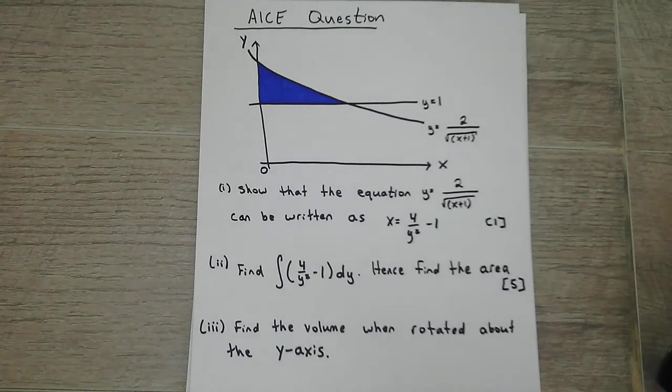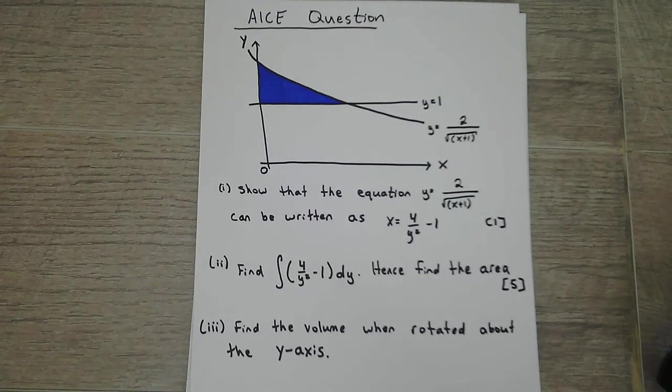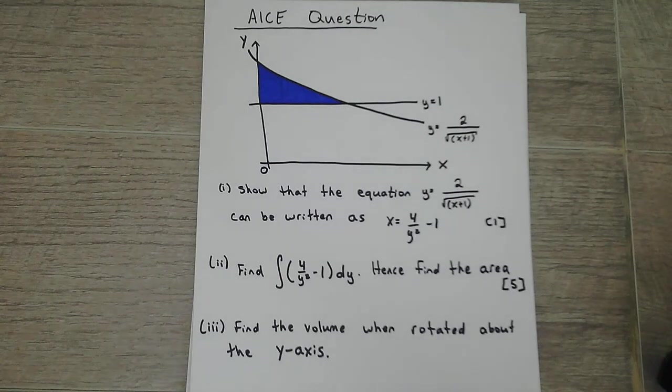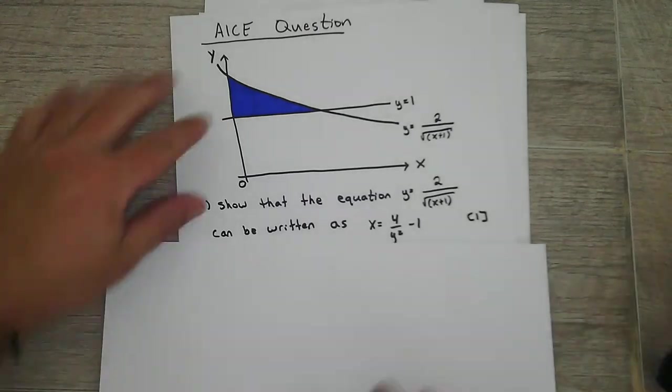Okay, so let's see. We have this graph, line y equals 1, and then the curve of 2 over square root of x plus 1. So step (i), show that the equation can be rewritten as that. Okay, so let's just do that first.